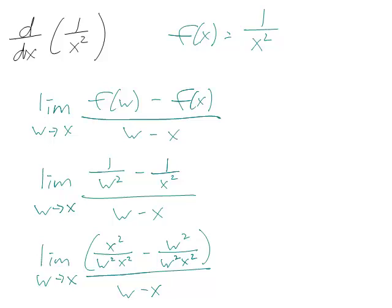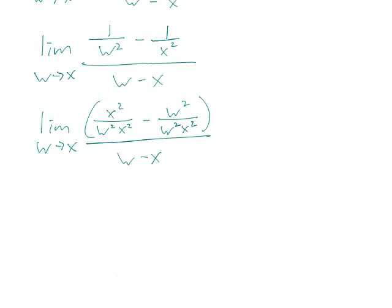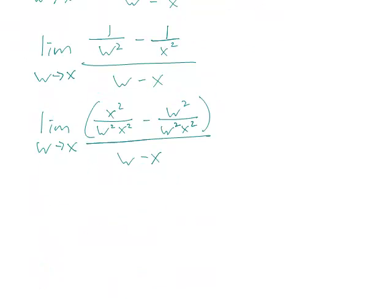I'm going to put the parentheses in so it's easy to tell what's on the numerator and what's in the denominator. And now this is x squared minus w squared over w squared x squared.